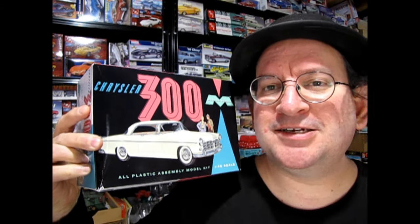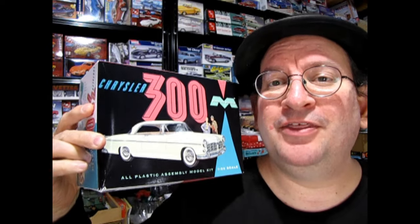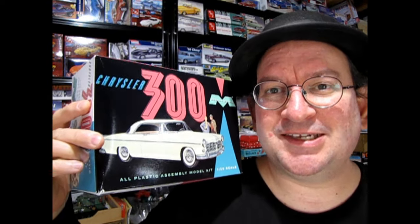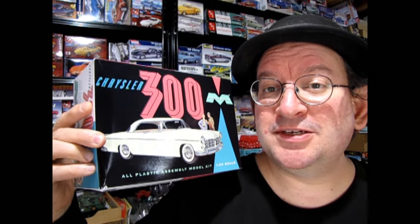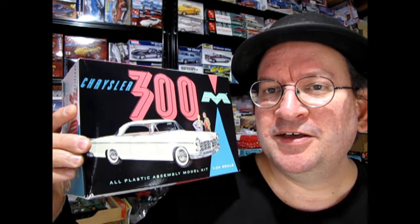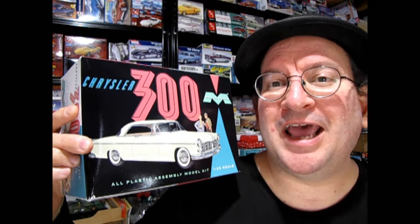Now this car is the first in that great 300 series. Next year for 56 it would be the 300B and for 57 it would be the 300C and onward. But this is the original that came out so technically it would be a 300A.